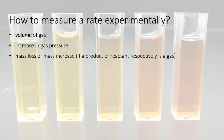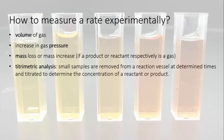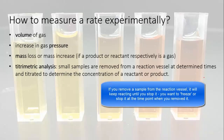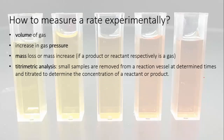If you have a solution with a reactant or product that can be titrated, then you can do titrometric analysis, where you remove small samples from your reaction mixture at regular times and titrate it to find out how much there is. To do this accurately, you need a way of quenching or stopping the reaction in the sample that you remove, so that your little sample doesn't keep on reacting while you're trying to titrate it. A back titration is a good way to do this.